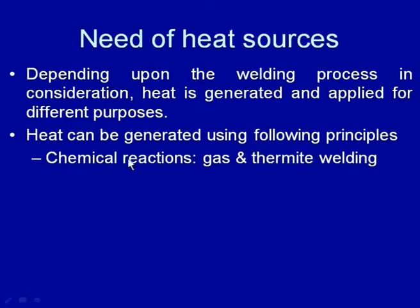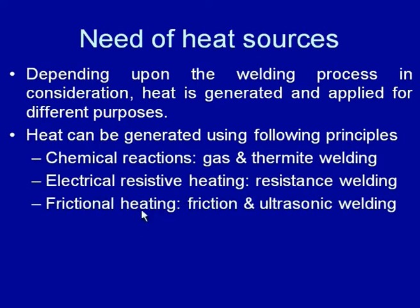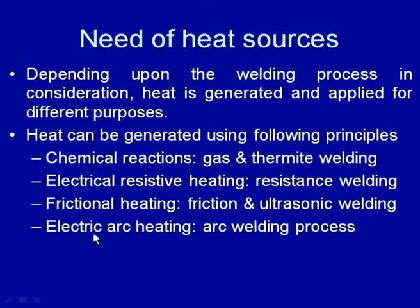Heat can be generated using the following principles: chemical reactions — mainly exothermic — used in gas welding and thermite welding processes; electrical resistance heating used in electrical resistance welding processes; frictional heating for softening and forging components to achieve metallic continuity, as in ultrasonic welding, friction welding, and friction stir welding; and electric arc heating, mainly used in arc welding processes.